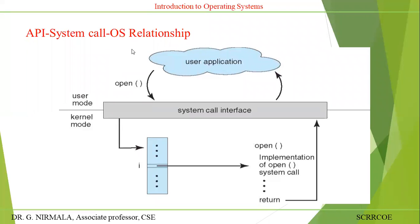Regarding the API, system call versus OS relationship: the OS will always be operated in two modes — a dual mode. One as user mode, and the second one as kernel mode.